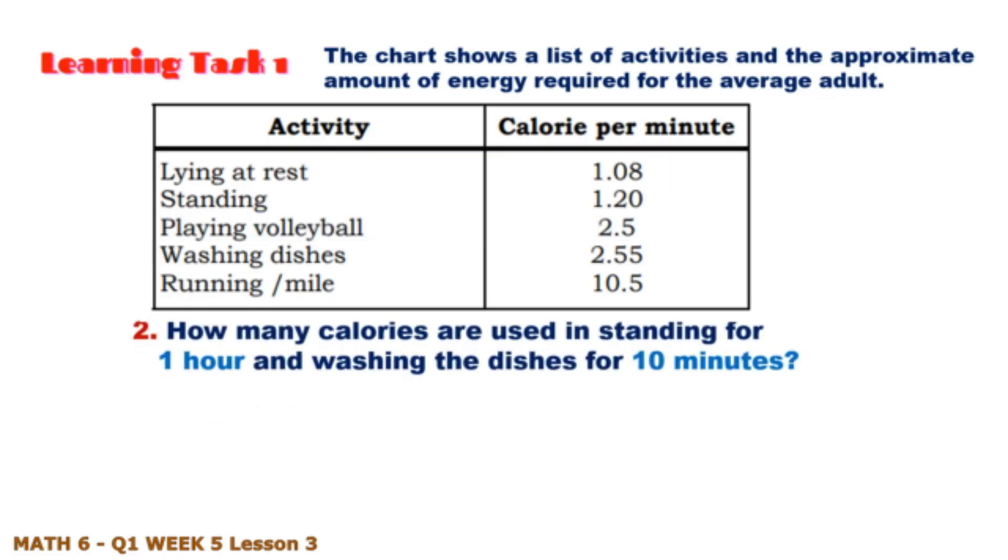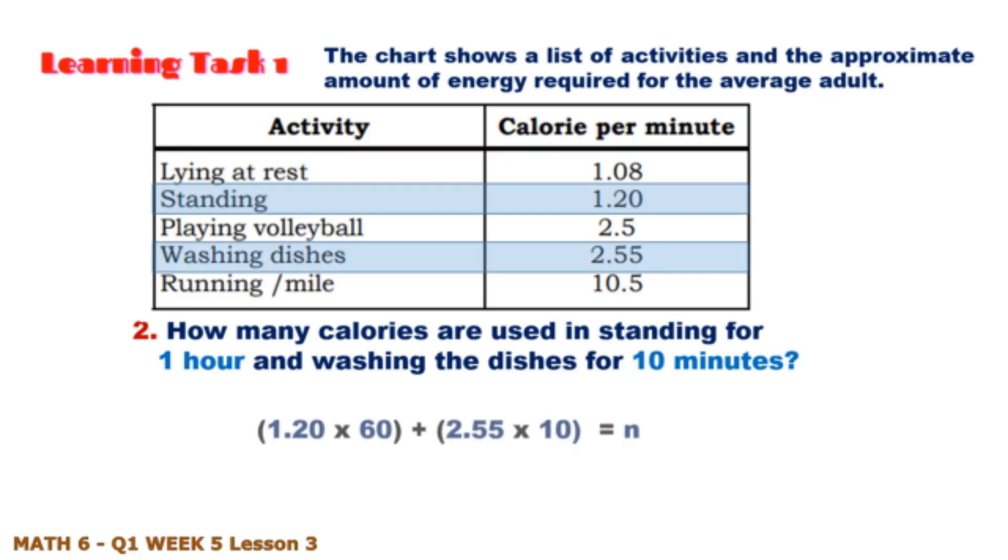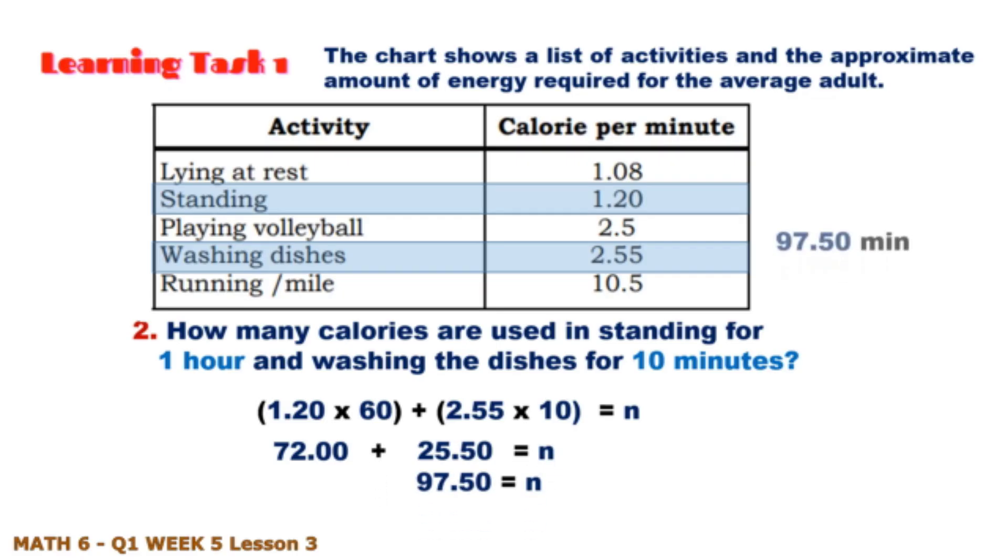How many calories are used in standing for one hour and washing the dishes for 10 minutes? 1.20 for standing times 60 equals 72, then 2.55 for washing dishes times 10 equals 25.50, then add to get 97.50.